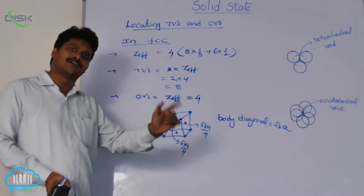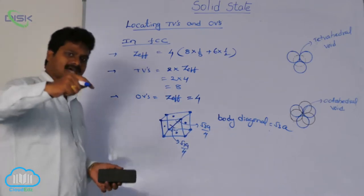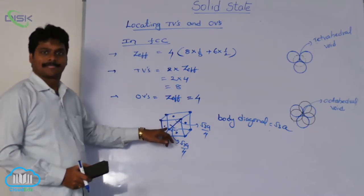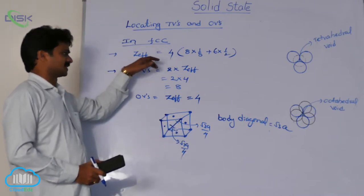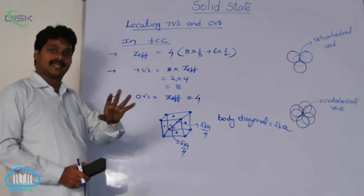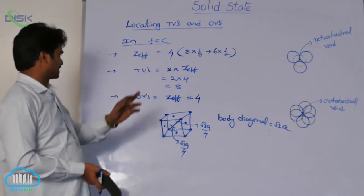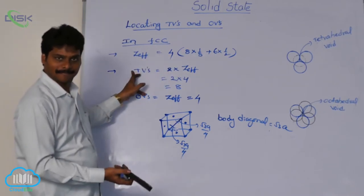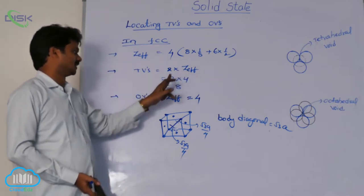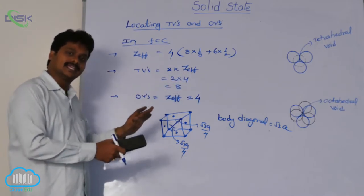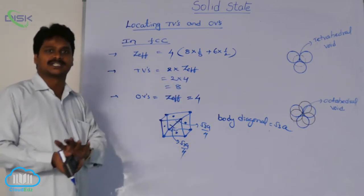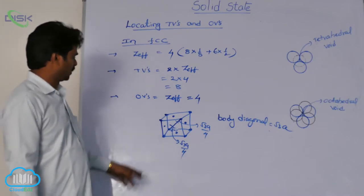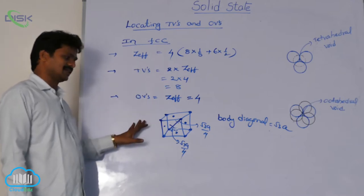So from this corner at one-fourth distance, and from that corner at one-fourth distance, there are tetrahedral voids. In the FCC system, there are 8 tetrahedral voids in total because Z-effective is 4, and tetrahedral voids must be double the number of effective atoms. Along each body diagonal at one-fourth distance from each corner, there will be a tetrahedral void — giving 8 total.